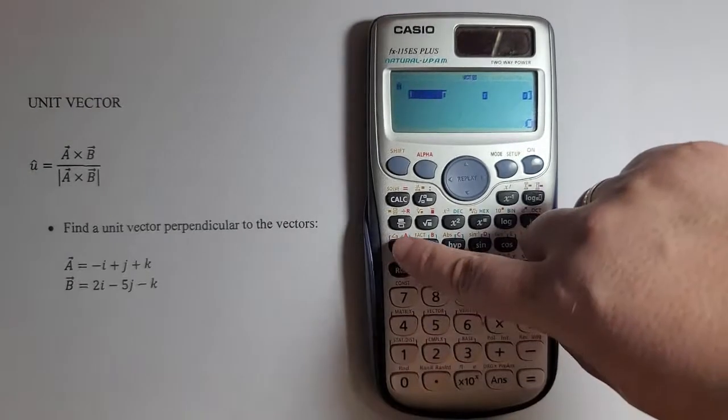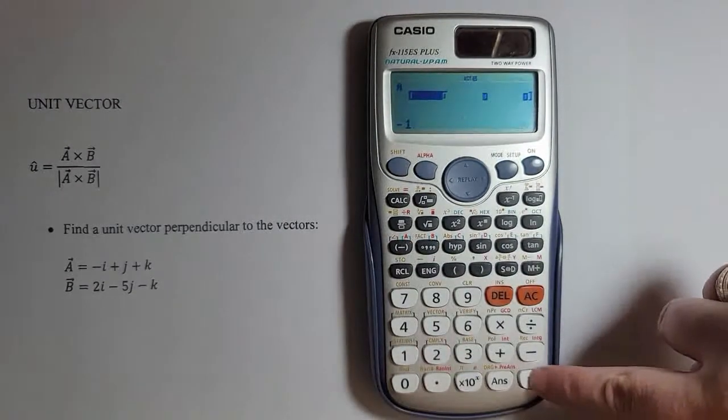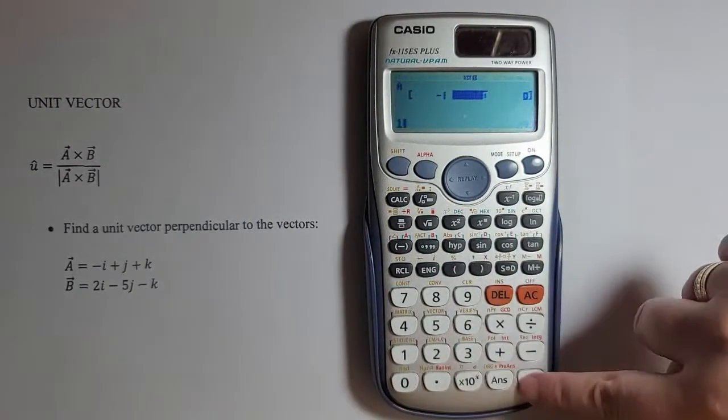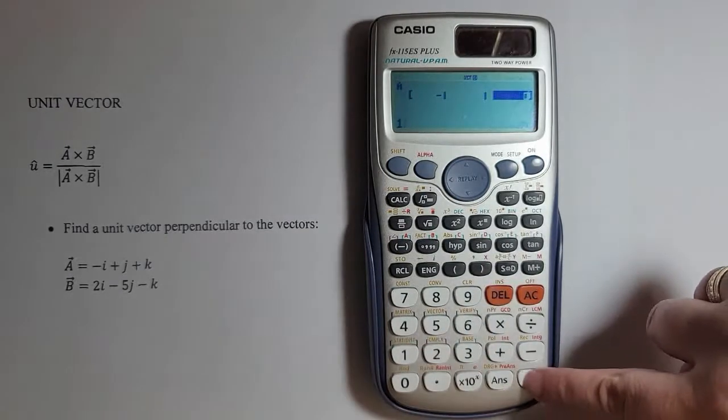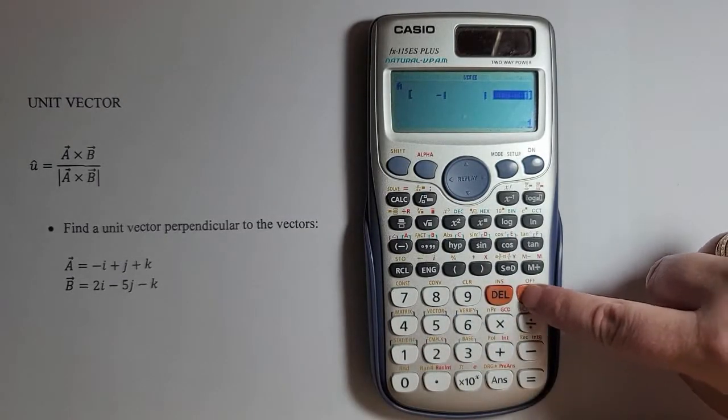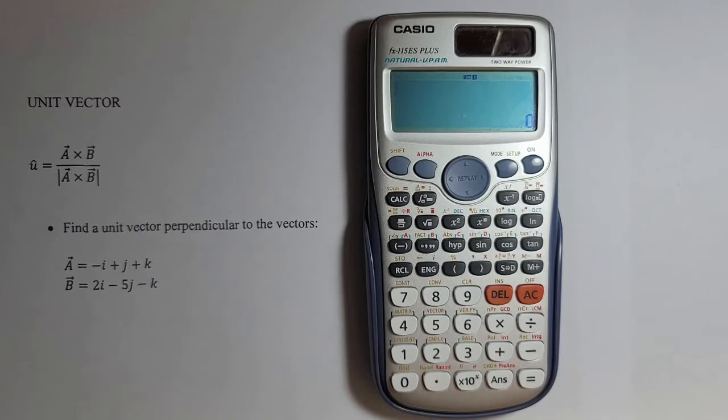Now I'll enter -1, equal, 1, equal, 1, equal. I'll press AC for the calculator to save the values.